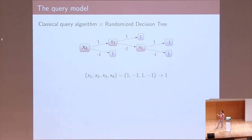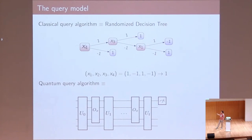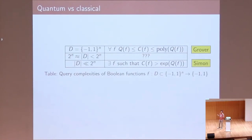A classical algorithm can be thought of as a randomized decision tree, where you query an entry of the input, and based on the result, output a value or continue. A quantum query algorithm alternates fixed unitaries with oracle gates that access the input, and at the end you measure: if you measure one, you accept; if zero, you reject. A lot of work has been done to compare these two models.